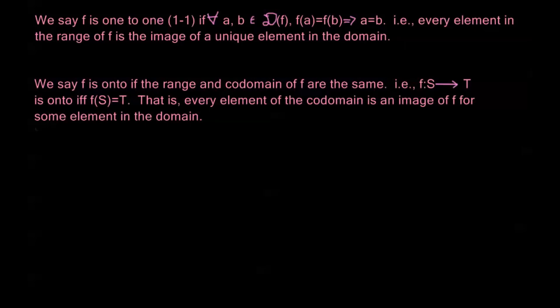And we say that a function f is onto if the range and codomain of f are the same. So in other words, if we have this function f defined from S to T, f is going to be onto if and only if the range, or the image of S, is equal to T exactly. So that is, every element of the codomain is an image of f for some element in the domain.